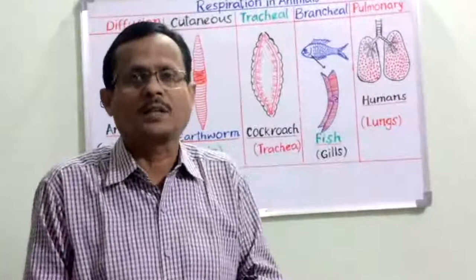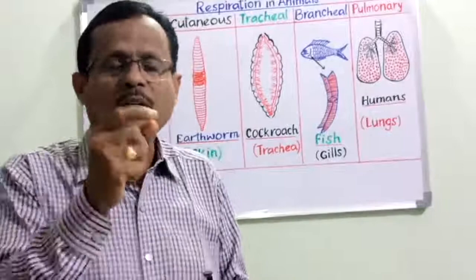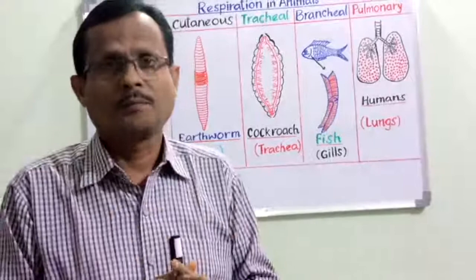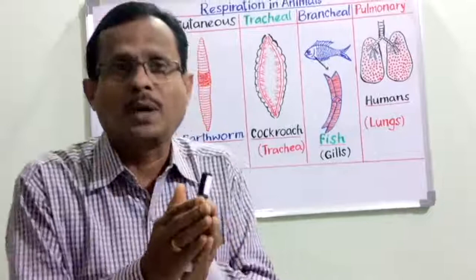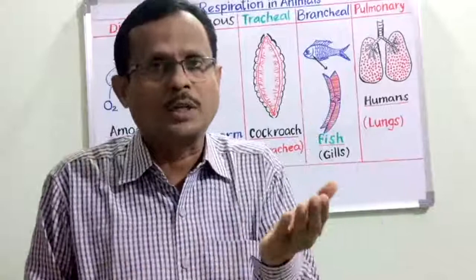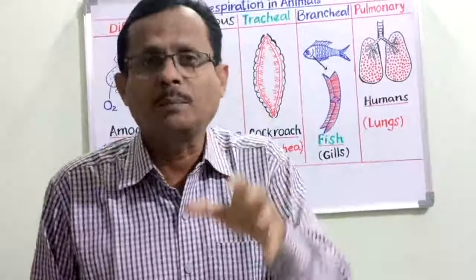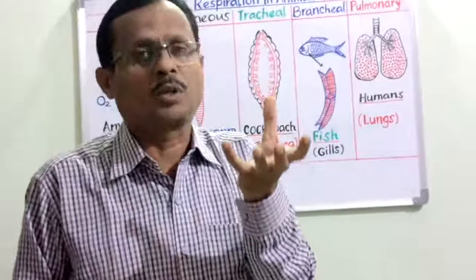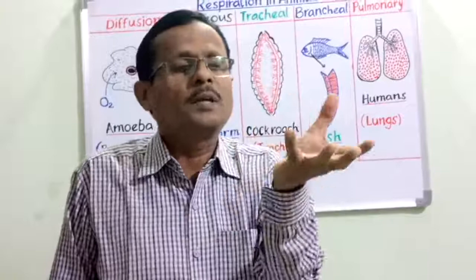The third type is tracheal respiration, in which most insects respire. Trachea means very small microscopic tubules present all over the body inside the insect. The insect's body is covered by a chitinous exoskeleton. The sternum and tergum — the ventral and dorsal plates — are held by fan-shaped alary muscles, which constantly help in the contraction and relaxation of the body. During relaxation, as the volume of the body increases, air is drawn in.